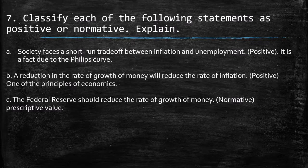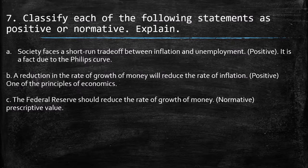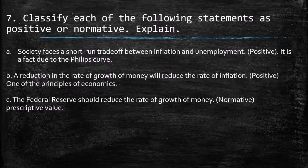Third — the Federal Reserve should reduce the rate of growth of money. This is normative. Once we move beyond scientific facts supported by data and start talking about what an organization should do, that is a normative statement. Someone is prescribing a course of action to the Federal Reserve — that makes it normative.